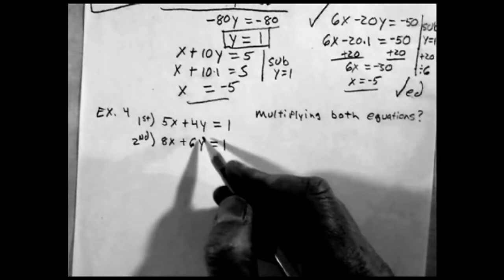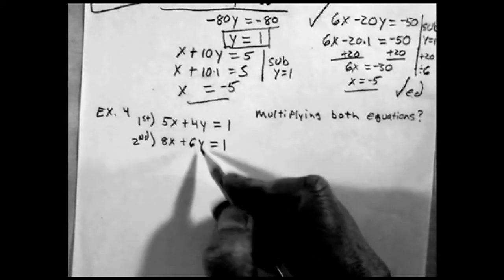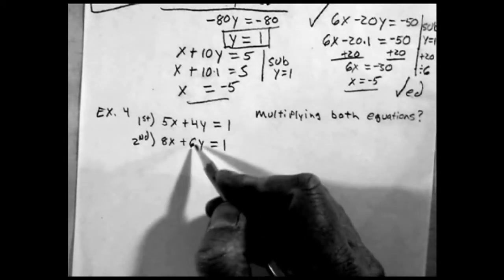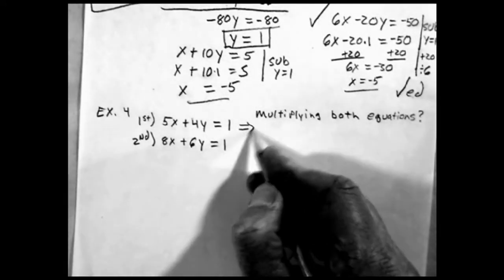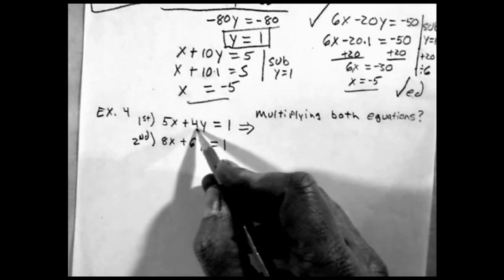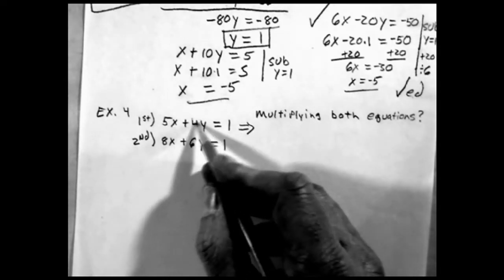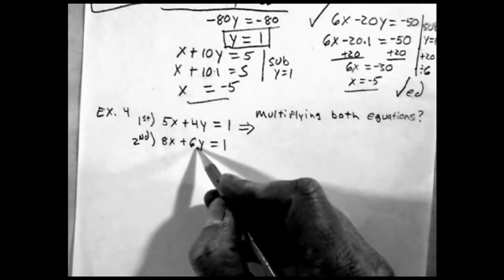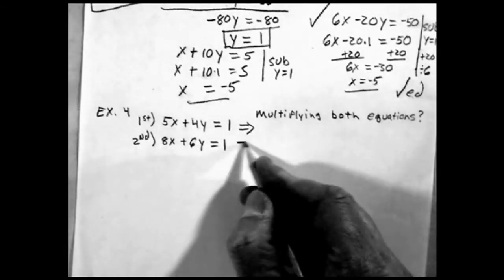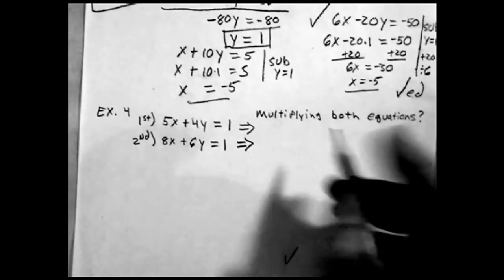I'm going to multiply, probably do this one because 6 and 4 is smaller than 5 and 8. So I'm going to multiply this one by 6, that will give me a 24 here, and this one by 4, that will give me a 24 here, and then I can subtract them. Let's see what the equations look like.